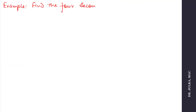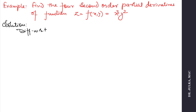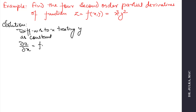Next example: find the four second-order partial derivatives of the function z = x³y². First we differentiate with respect to x, treating y as constant, and we will get ∂z/∂x, also written as f_x, which equals 3x²y².